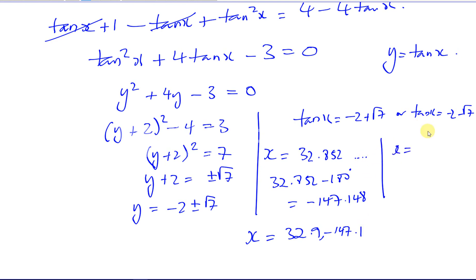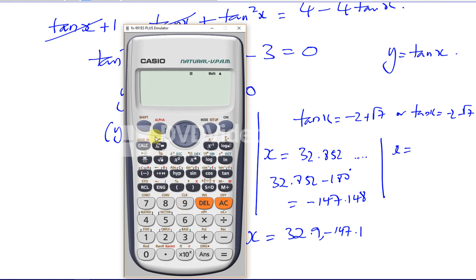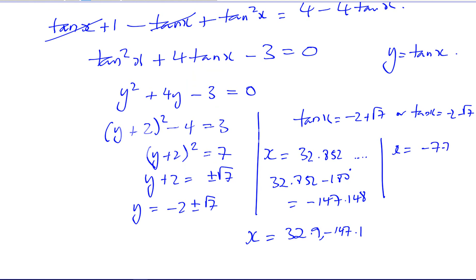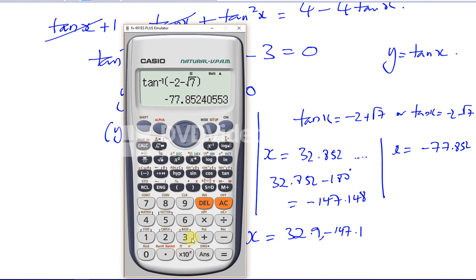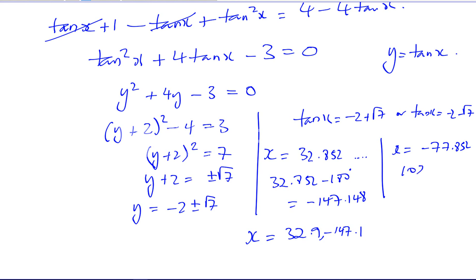When I put the second value in my calculator — shift tan of (−2 − √7) — that gives minus 77.852°, which is in our range. If I take away 180 it goes out of range, but adding 180 gives 102.148°, which is still in the range. So my other answers are −77.9° and 102.1°. Here are the four answers to one decimal place which satisfy this equation.